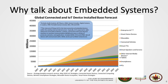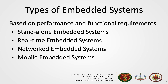The number of PCs did not even grow because people are already satisfied with their smartphones. Embedded systems are classified into four types based on their performance and functional requirements. These are the standalone embedded systems, real-time embedded systems, network embedded systems, and mobile embedded systems.